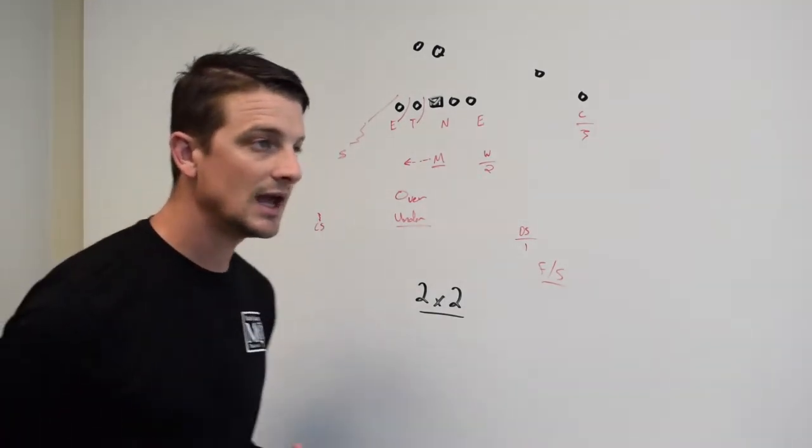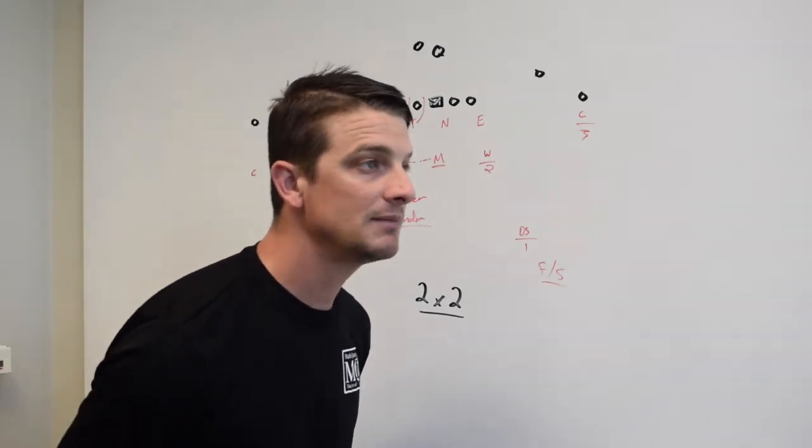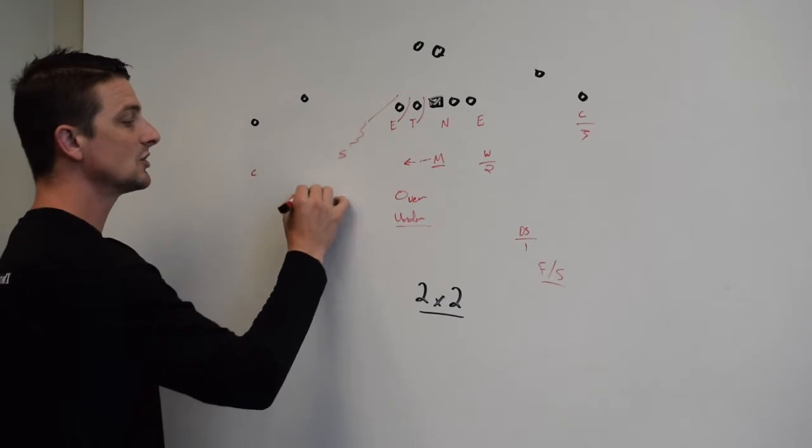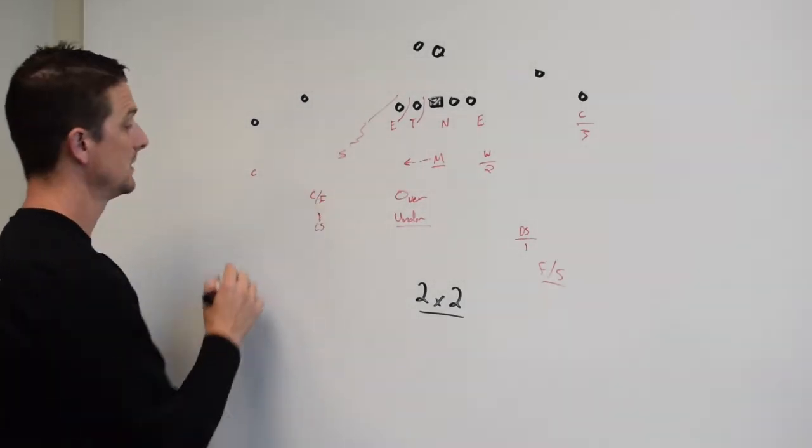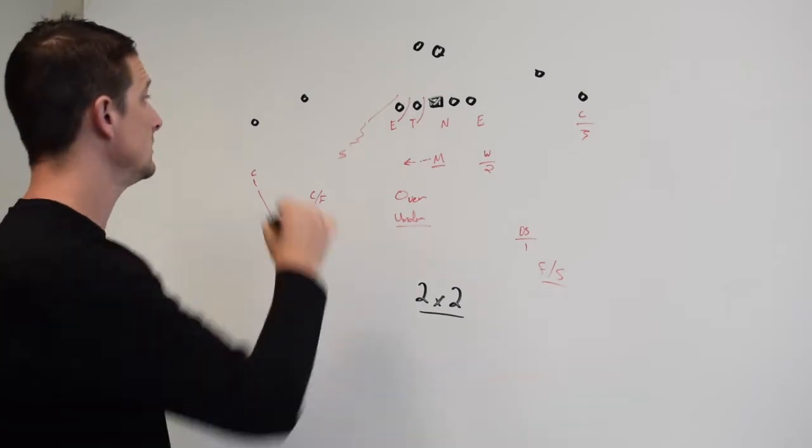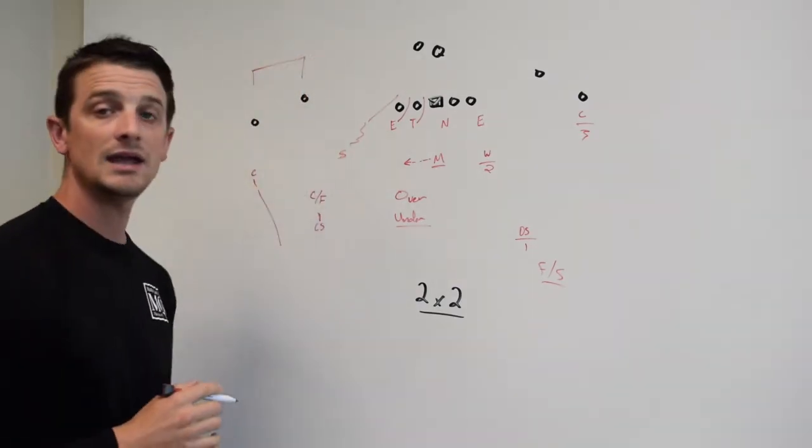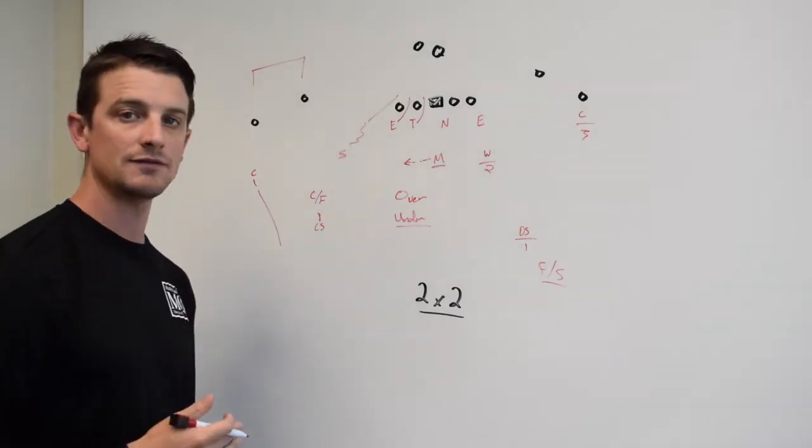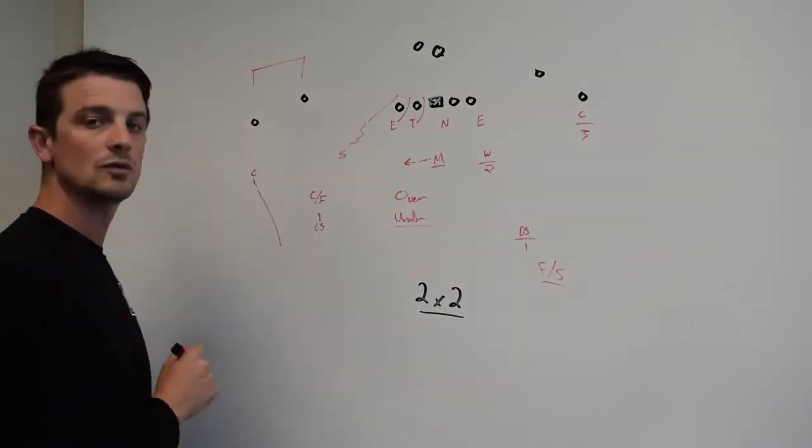It's going to be a flat foot, hot foot read. As he's walking down, he's going to get a nice alignment and fire his feet at the snap. He is your curl-flat player. He's going to work back and apex the unit. He is over top of one and two in under coverage. They are relating and matching off the receivers. They're both reading two to one.